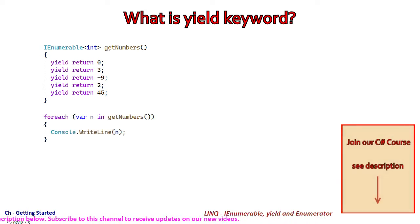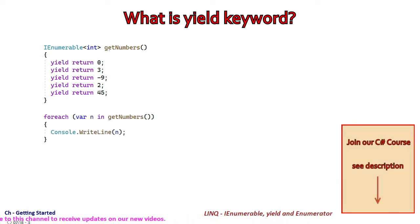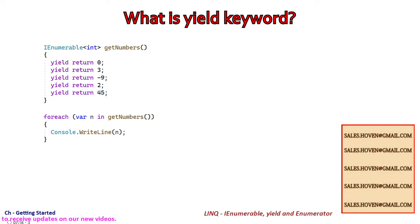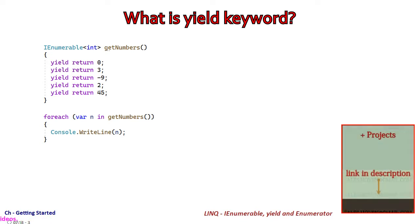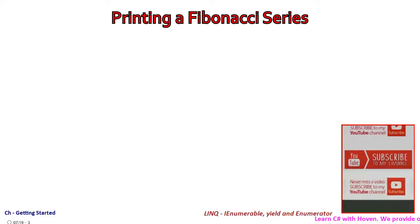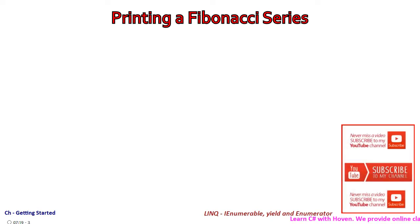A for-each loop has been used to obtain the numbers one by one, and the series is step by step printed on the console. The yield statement can be used to write a very readable program for printing a Fibonacci series.